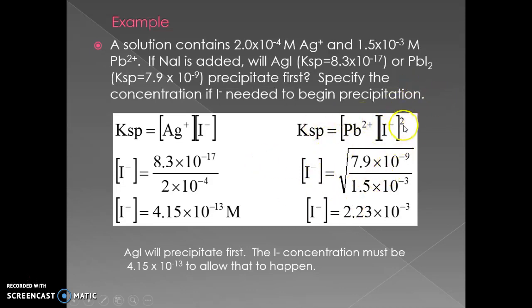Notice that I minus is squared. You need a much larger amount of iodide to get the lead to precipitate out. So all of the silver is going to precipitate out first. And then once you've added this concentration, that's nowhere close to the concentration you need. You're going to continue to add I minus, and eventually you'll get the lead iodide to precipitate out.